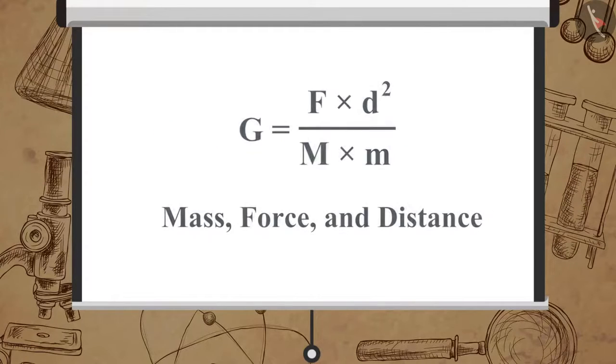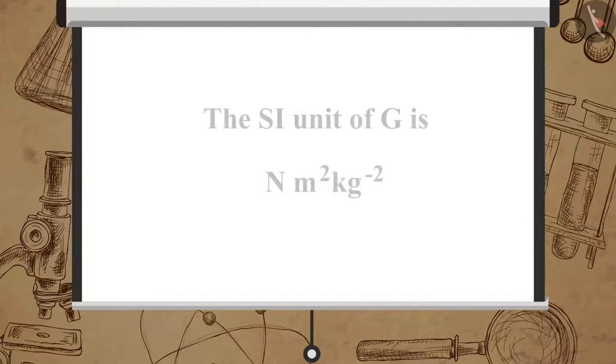We can find the SI unit of G by substituting the units of mass, force and distance in this equation. The SI unit of G is Newton meter square per kilogram square.